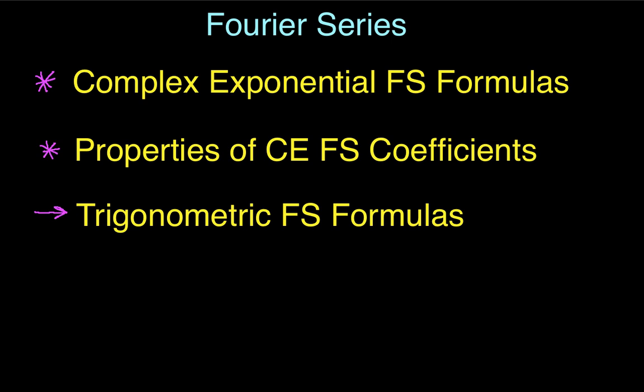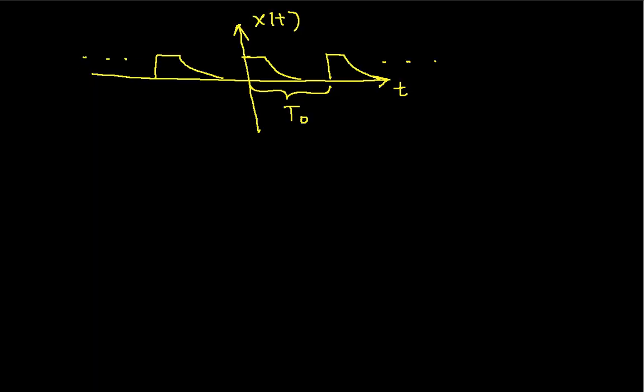So, let's go to our periodic function. This is a periodic function. It's periodic with fundamental period t0. It has a radian frequency omega 0 of 2 pi over t0. Okay.